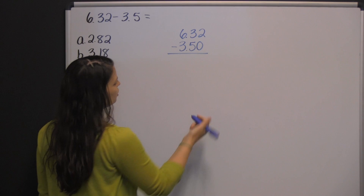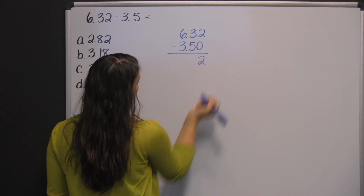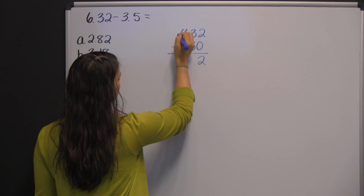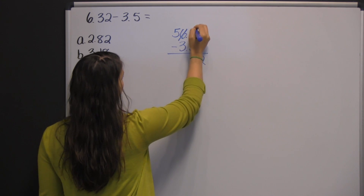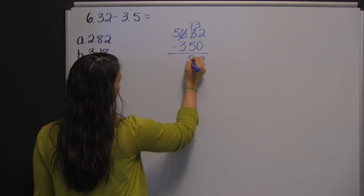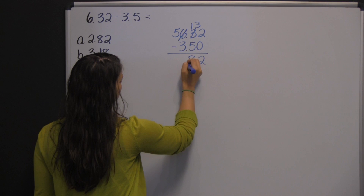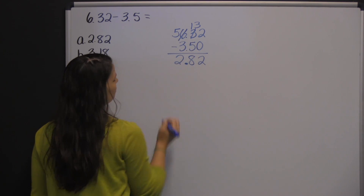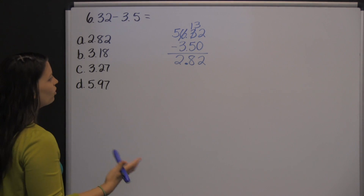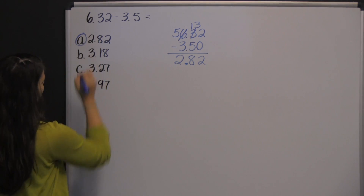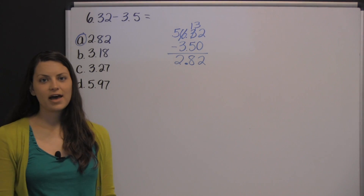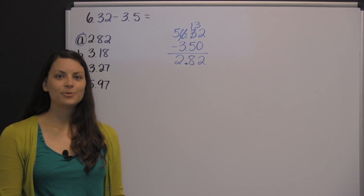Now we're ready to subtract. Two minus zero is two. You can't take five from three, so you need to borrow from the six, which makes it a five, and then you give ten to the three, so that's thirteen. Thirteen minus five is eight. Bring down your decimal. Five minus three is two. So our answer was somewhere around two — two and eighty-two hundredths — and there's answer A.